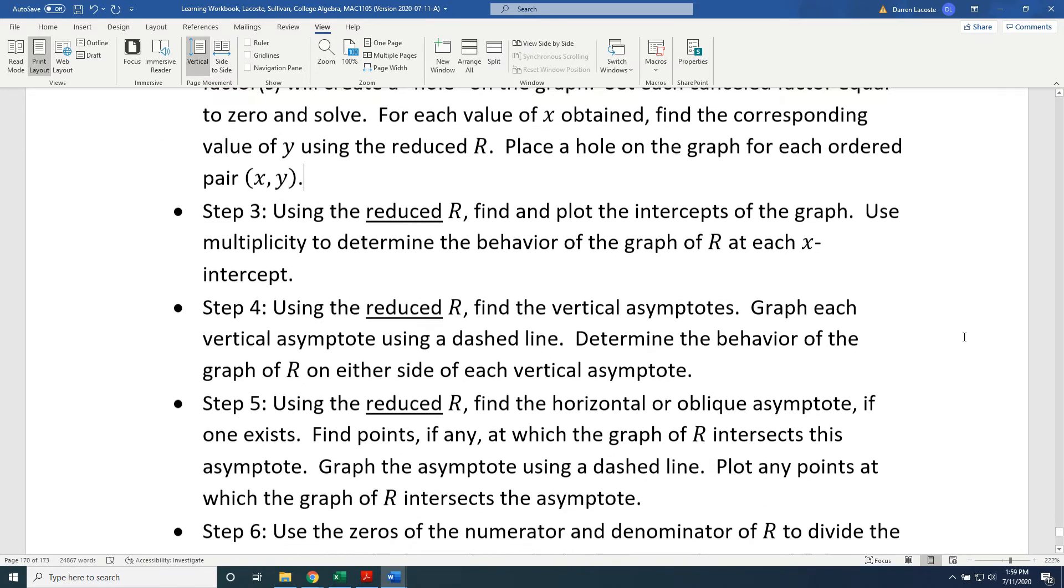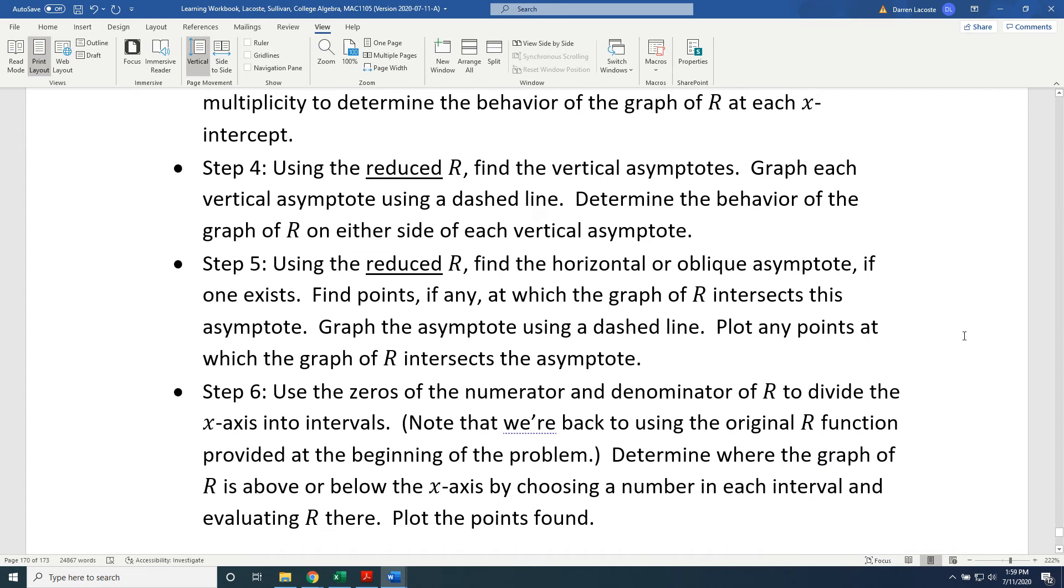Step 4: Using the reduced R, find the vertical asymptotes. Graph each vertical asymptote using a dashed line. Determine the behavior of the graph of R on either side of each vertical asymptote.